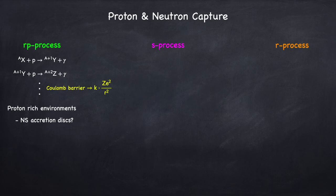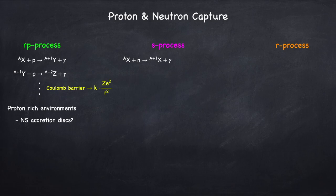Let's start off with the S process — this is slow neutron capture. We start off with some seed nucleus X again with mass A, and we're going to capture a neutron, making an isotope of the same species with a new mass A plus 1. Now because this is a slow process, let's assume for the sake of argument that the new nucleus is unstable. If it's stable, it'll just wait around until it captures another neutron, and eventually you'll get an unstable isotope. So assuming the new nucleus is unstable, it's going to wait around until it beta decays into a stable nucleus by converting a neutron into a proton.